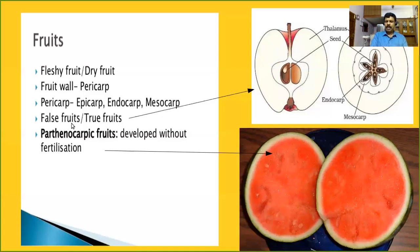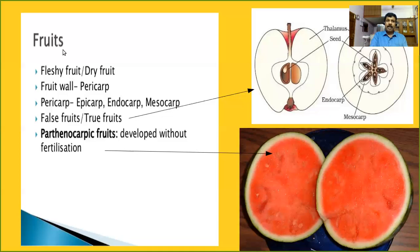One more type of fruit is the parthenocarpic fruit. Parthenocarpic fruits are fruits that develop without fertilization. In most cases, fruit is the product of double fertilization. But in some plants — especially banana and pineapple — the fruit can develop without fertilization. Such fruits are collectively called parthenocarpic fruits.